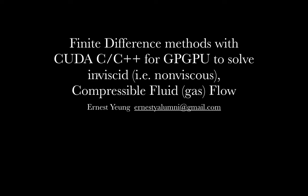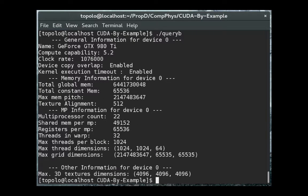I wanted to take advantage of the parallel processing power of the GPU using CUDA C/C++ as the language. Here's a video of the GPU that I used, my GeForce GTX 980 Ti from NVIDIA. Using a CUDA C script that I wrote, queryB.cu, which is available on my GitHub, I can print out information directly off the device GPU.